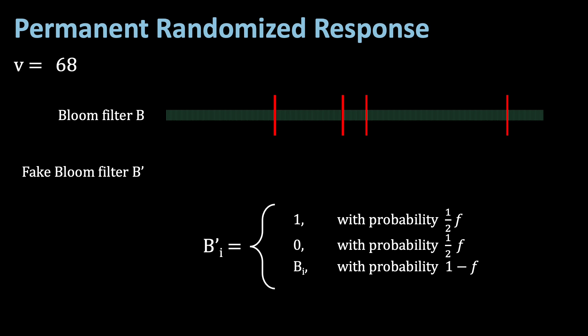F can be changed according to the privacy guarantee needed. So if you imagine an F of, for example, 1, the probability to get 1 and 0 are exactly equal. High F values yield stronger privacy protections.